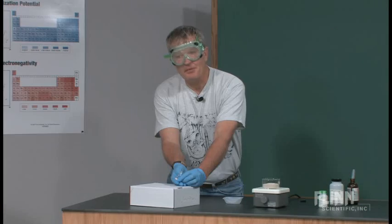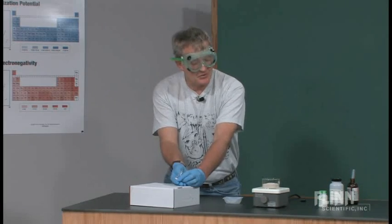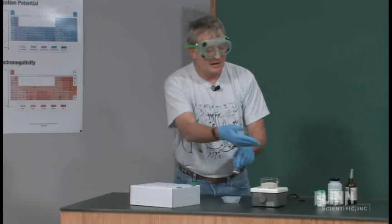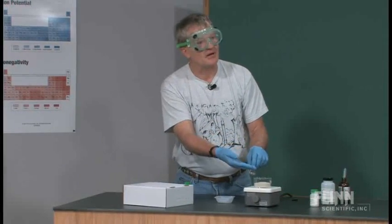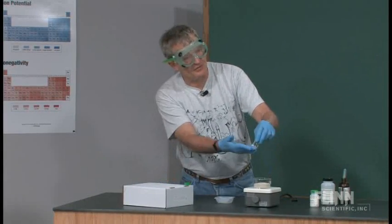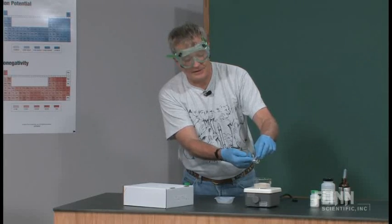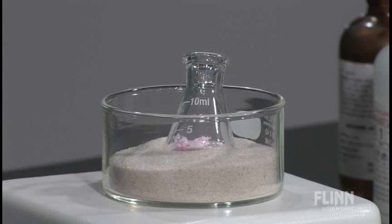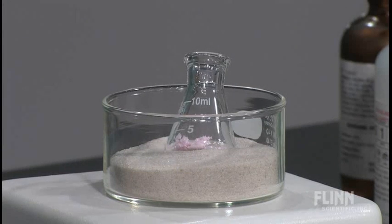But if they calculate the formula for the compound using the information they have, the mass of the manganese that they started with, an excess of hydrochloric acid so that now they can do a subtraction from the product to find out the chloride or the chlorine that's in there, they'll get an empirical formula that comes out to be real close to MnCl2, which is what it's supposed to be.